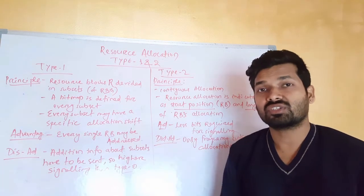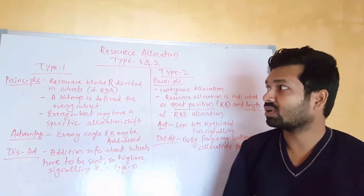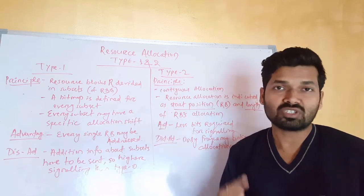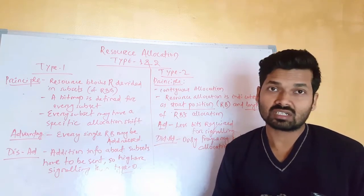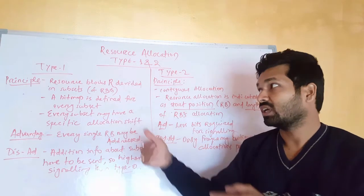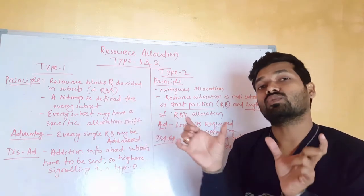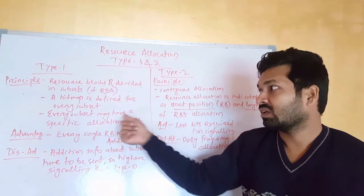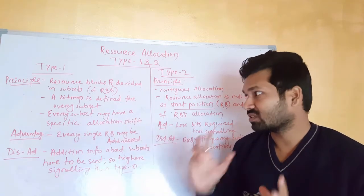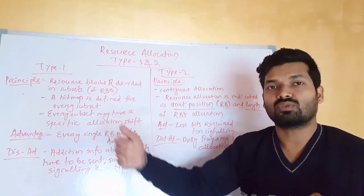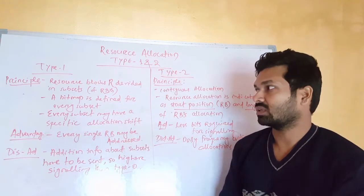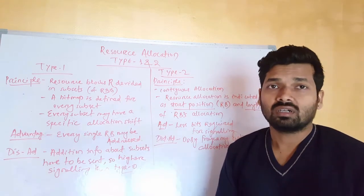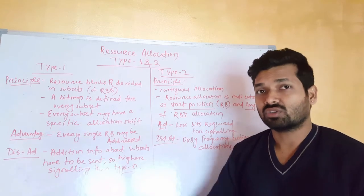In resource allocation type 1 for PDSCH, the resource blocks are divided into subsets, and a bitmap is defined for every subset instead of every resource block group. In type 1, we are dividing them into subsets and addressing one bitmap for every subset. Every subset may also have a specific allocation shift, meaning it will shift in specific allocation. Those are some facts and principles of PDSCH resource allocation type 1.